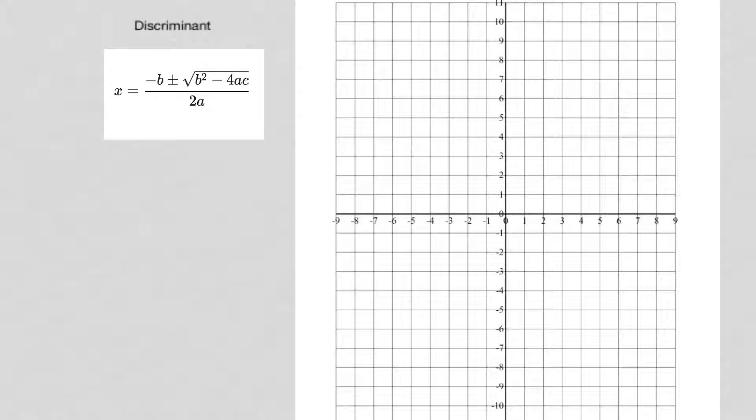The discriminant is the part that's underneath the square root right here. The discriminant can be found by just doing the math on b squared minus 4ac. And to find those, we use the standard form for all quadratics, ax squared plus bx plus c.